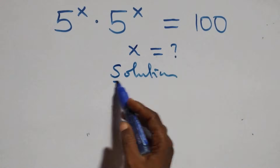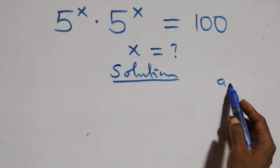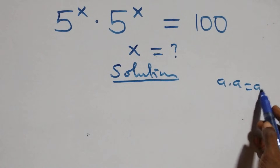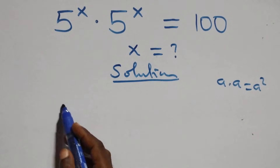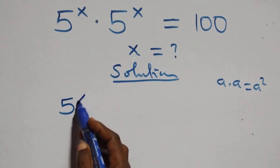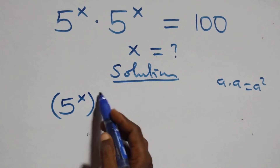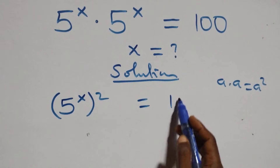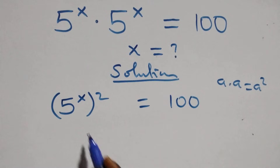What we have here: this follows when we have a times a, same thing as a squared. Multiplying, we have 5 raised to power x, times 5 squared, equals to 100.